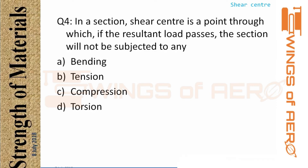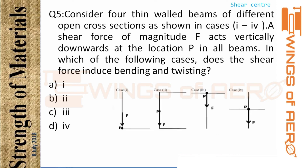MCQ 4: In a section, if the resultant load passes through the shear center, the section will not be subjected to — the answer is torsion (no twisting), so option D is correct.